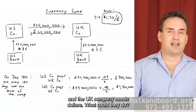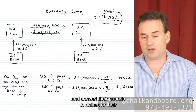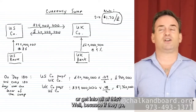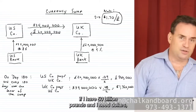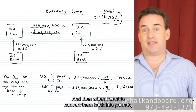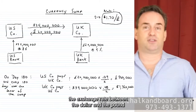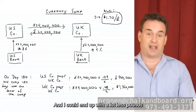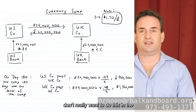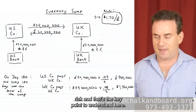Now technically, if the US company needs pounds and the UK company needs dollars, what could they do? They could both go into the spot foreign exchange markets and convert. Why do they need a currency swap? Because if you have 50 billion pounds and you need dollars and go into the foreign exchange markets, you convert them into dollars — but when you want to convert back into pounds, you're exposed to foreign exchange rate risk. The exchange rate could go in an adverse manner and you could end up with far fewer pounds than you started with.